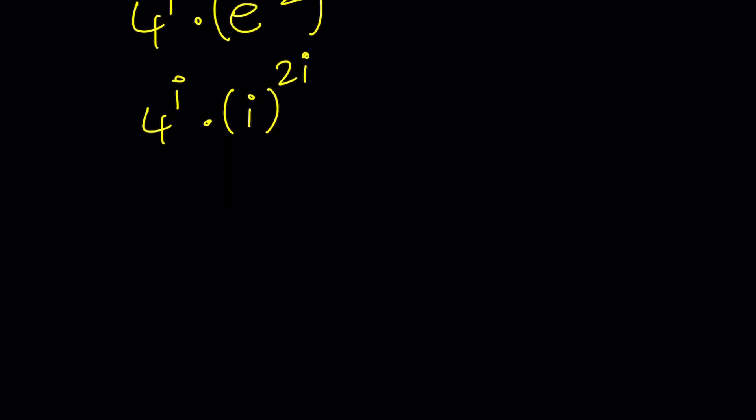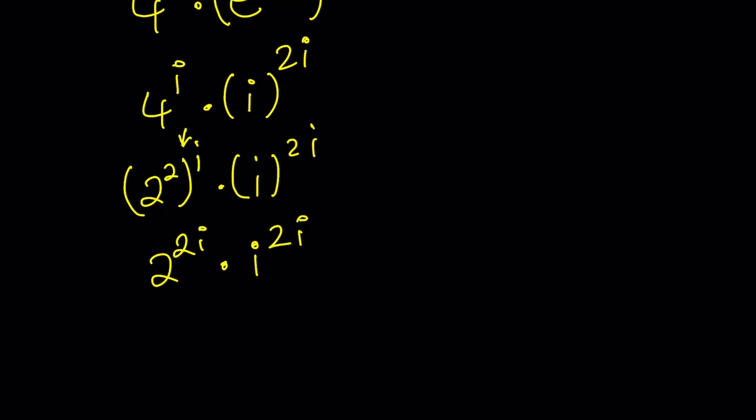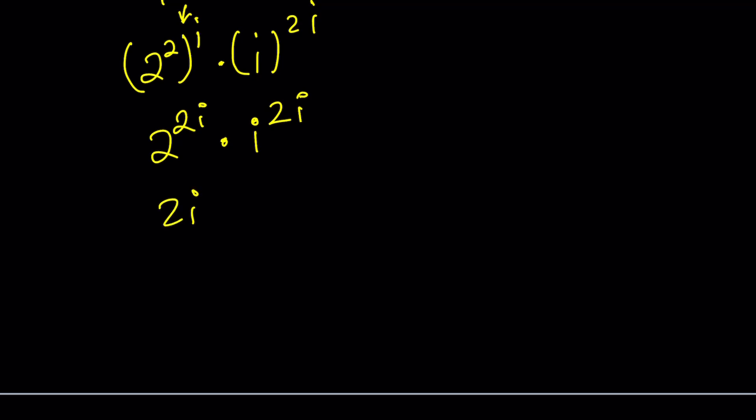Four is two squared. So, we can write it as two squared to the power i. And then notice that the exponent is 2i here. And then it needs to be 2i here as well. So, I can combine those into a single expression. That's what's so powerful about exponential rules. So, now I can write this as two to the power 2i multiply by i to the power 2i. Which can be written as 2i to the power 2i. And yes,